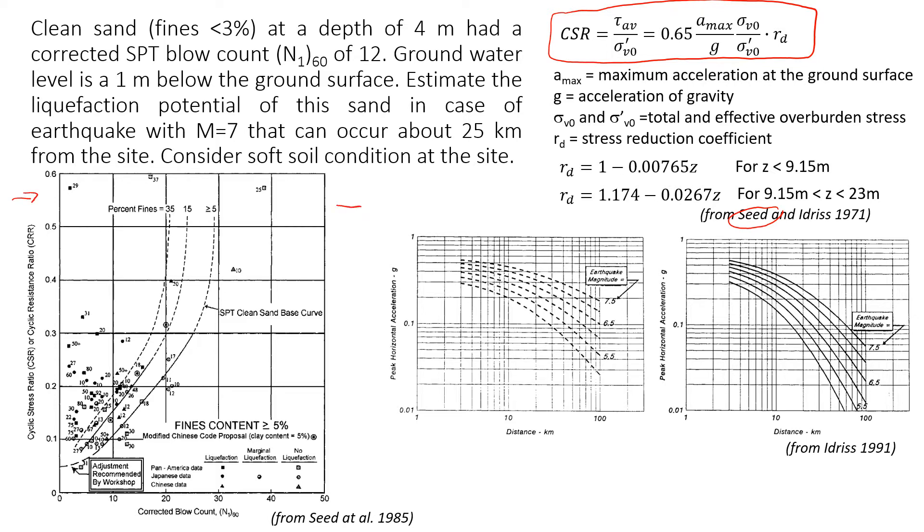Let's look at this example. We have a clean sand, which means fines less than five percent, in this case less than three percent, at a depth of four meters.